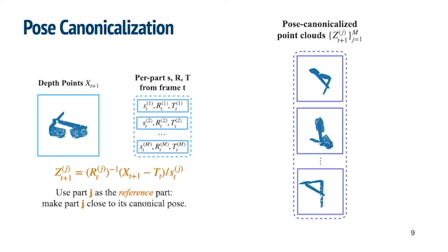Now our network takes pose canonicalized point clouds as input, and only needs to output a small residual pose close to identity, which means we've simultaneously canonicalized both the input and output, thus significantly simplifying the pose estimation.